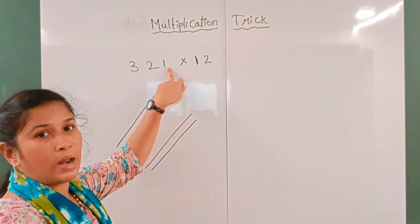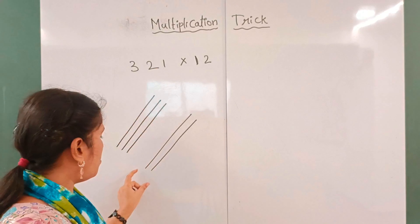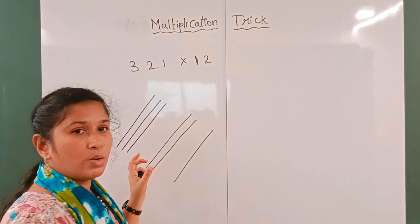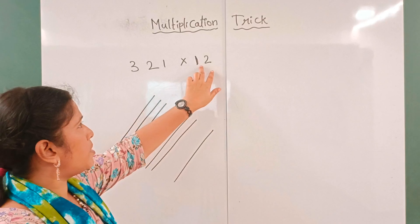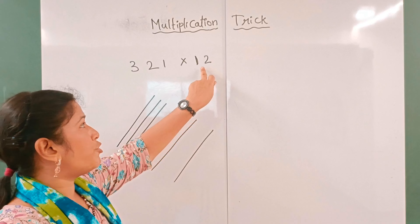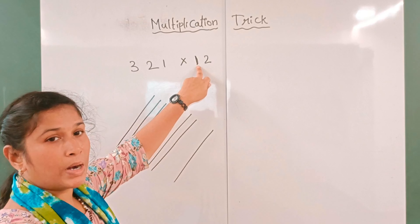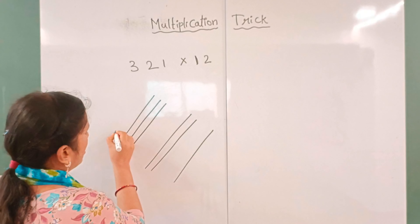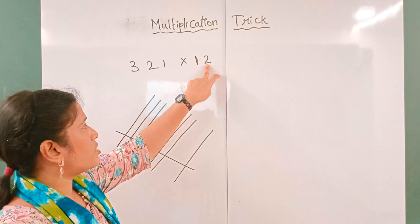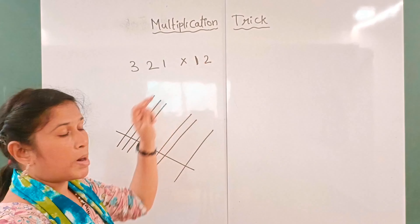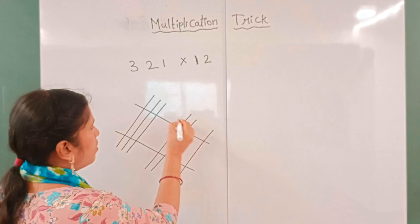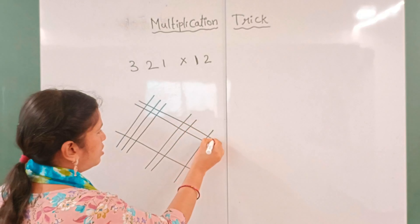The next digit is 1, so after a little gap, one more line is drawn. Next we multiply by 12. The first digit is 1, so one line with a gap. Then one gap, then two lines for the digit 2.